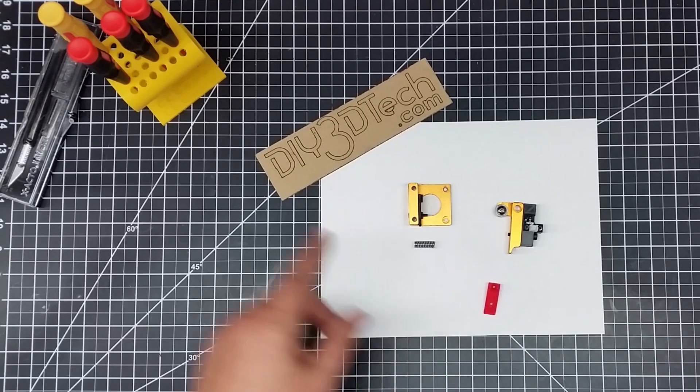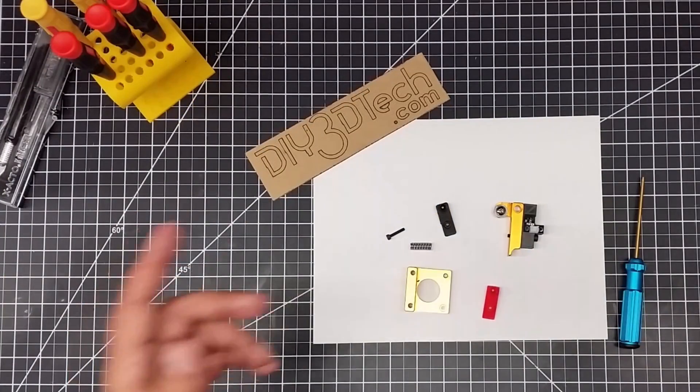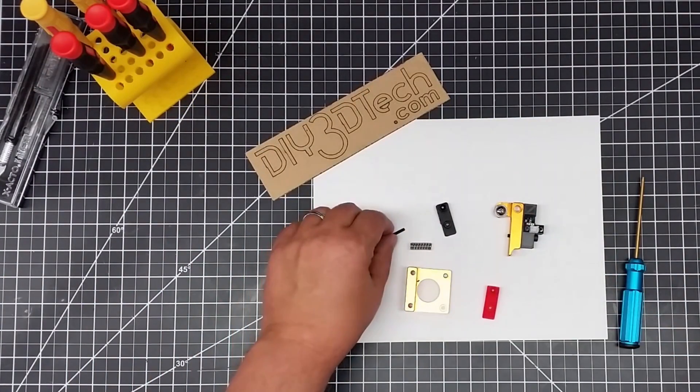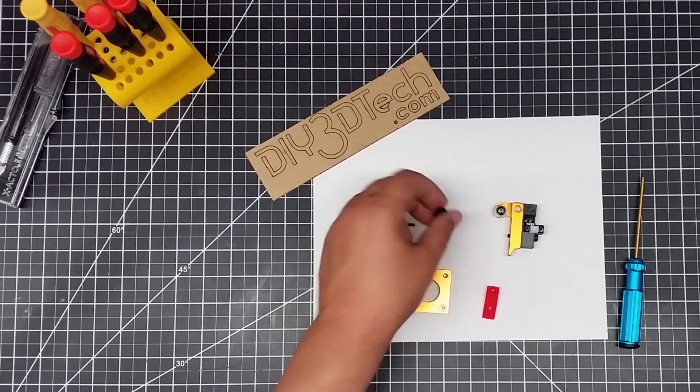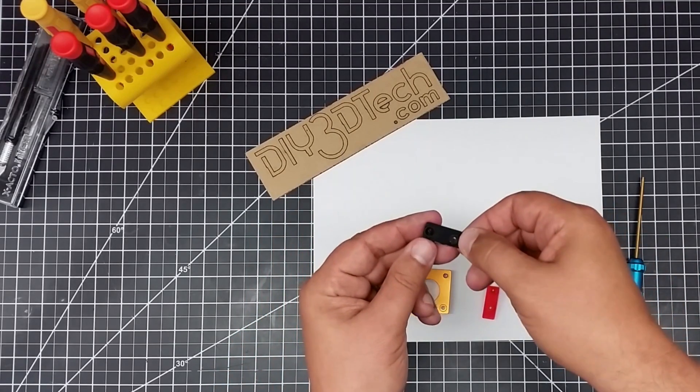So what we're going to do is pop this off. What I've done is simply removed this M3, and this has come right off.